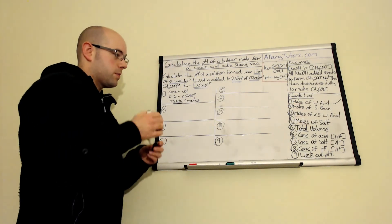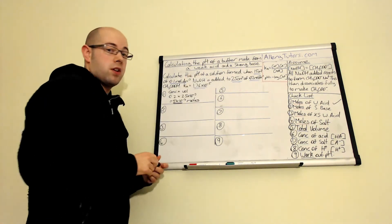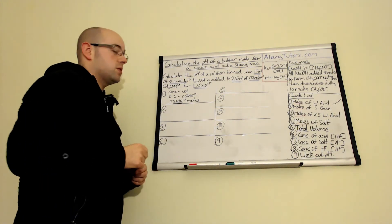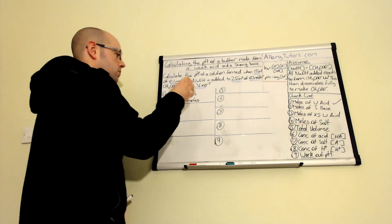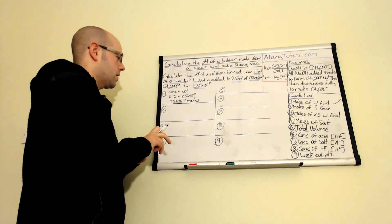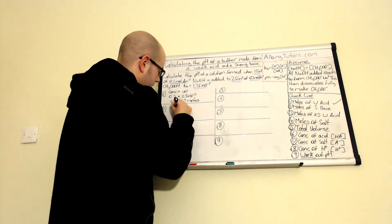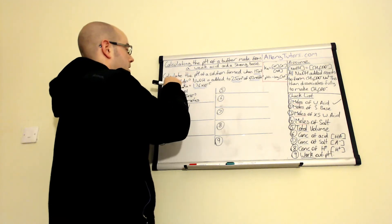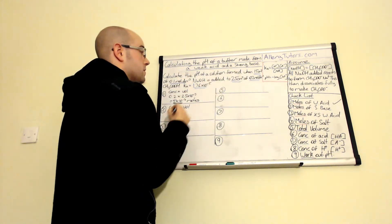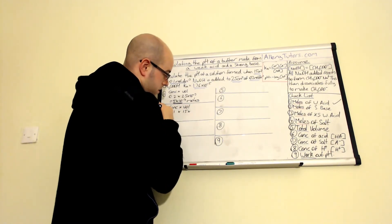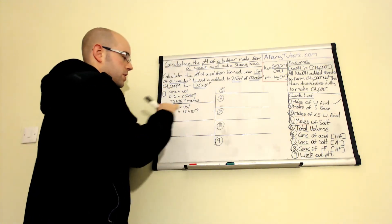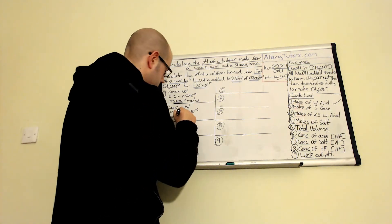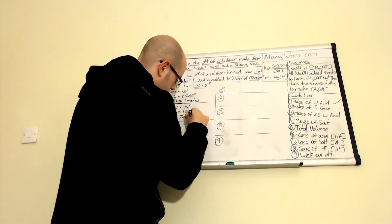Next we work out the moles of our strong base, sodium hydroxide. We have 15 cm³ of 0.1 mol dm⁻³ NaOH. Using the same calculation — concentration × volume — the concentration is 0.1 and the volume is 15 × 10⁻³ dm³. Multiplying those gives 1.5 × 10⁻³ mol of sodium hydroxide.